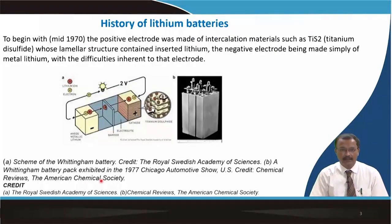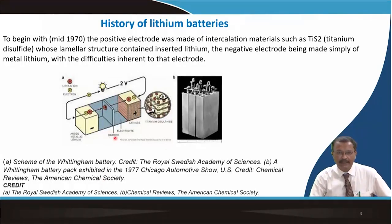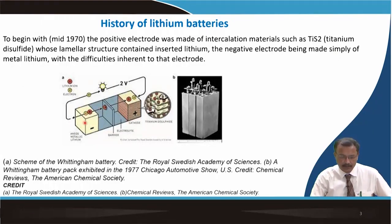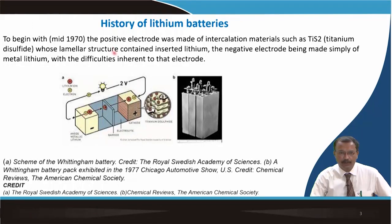It all began in the mid-70s. The positive electrode was made out of an intercalation material like titanium disulphide, which has a lamellar structure containing inserted lithium. As the negative electrode, metallic lithium was used — anodic metallic lithium. The voltage is basically the difference in chemical potential of lithium in the lithium metal and in the positive electrode, which leads to a 2-volt battery.